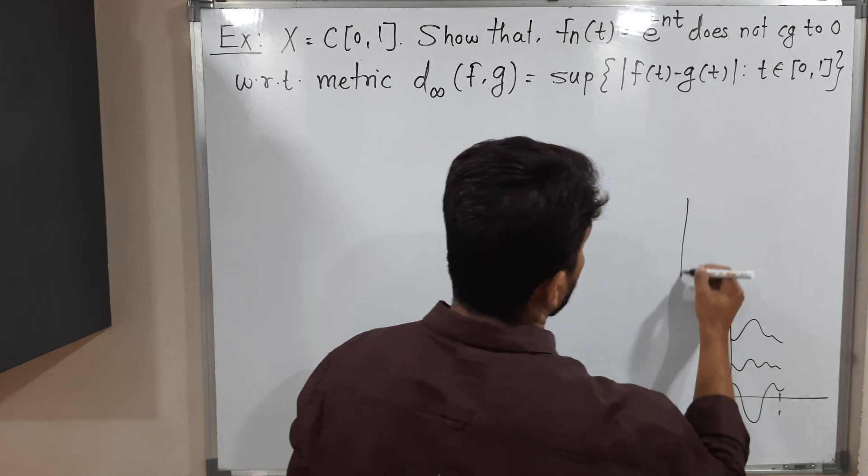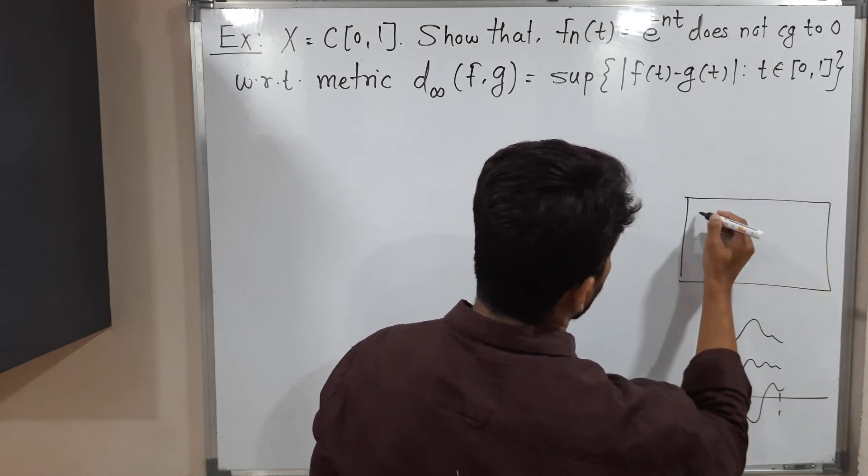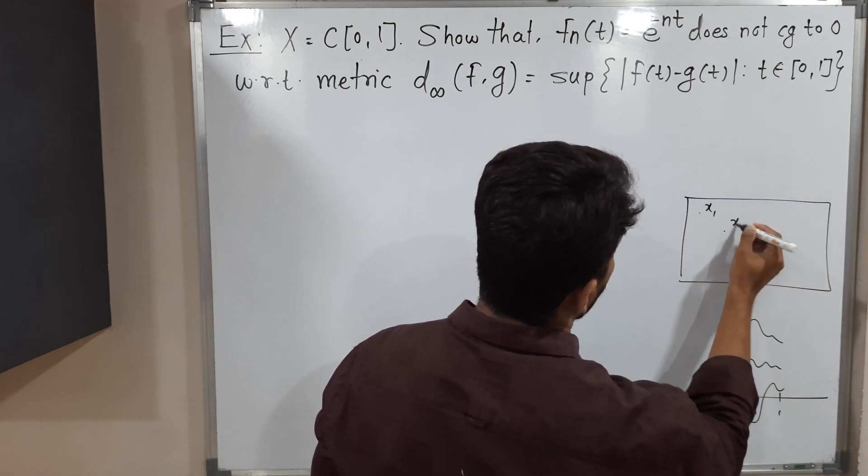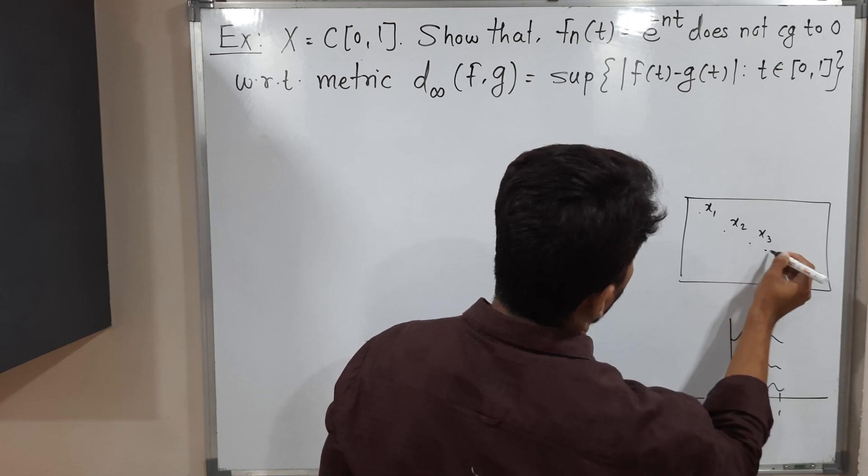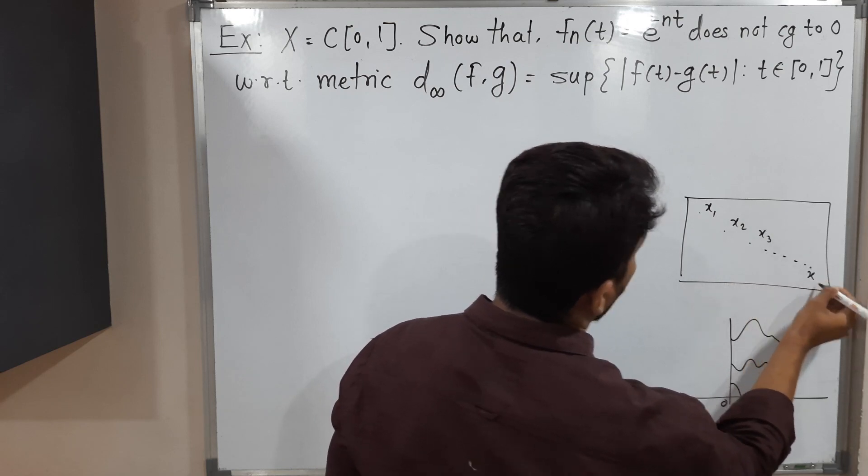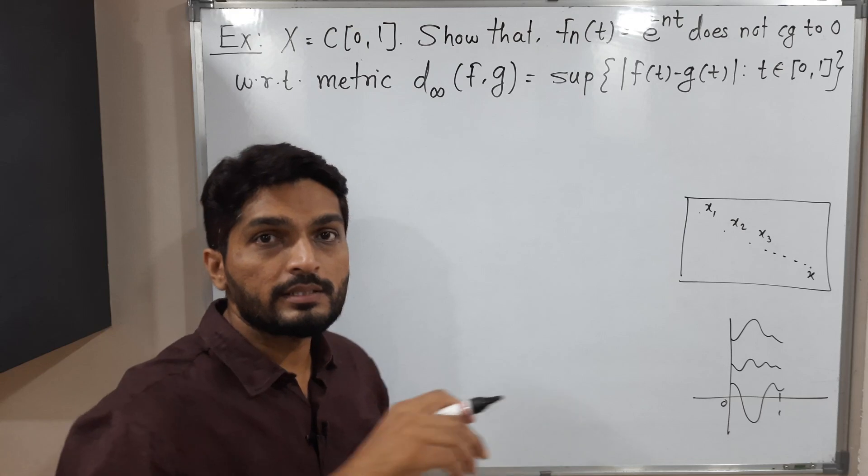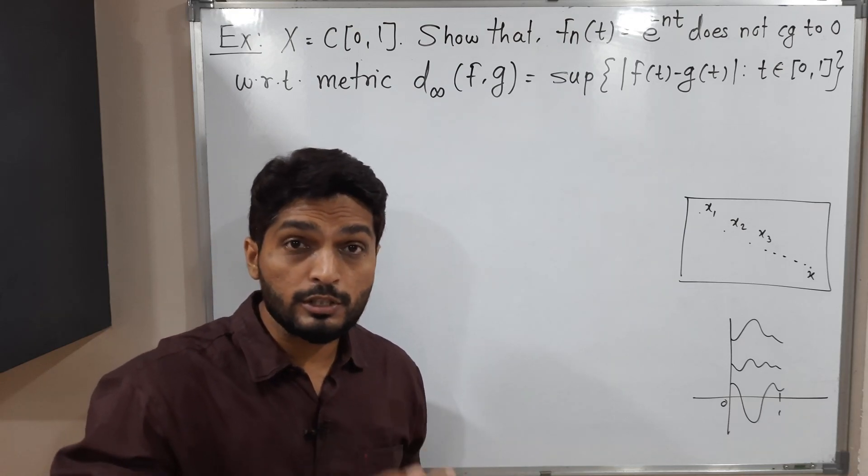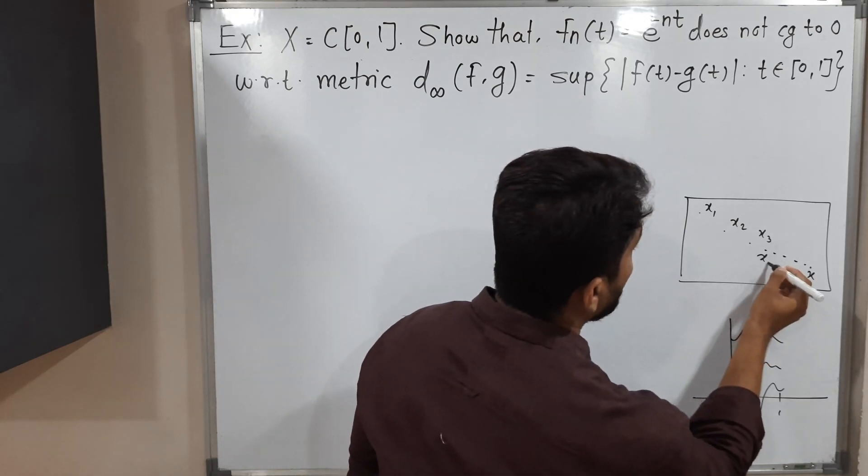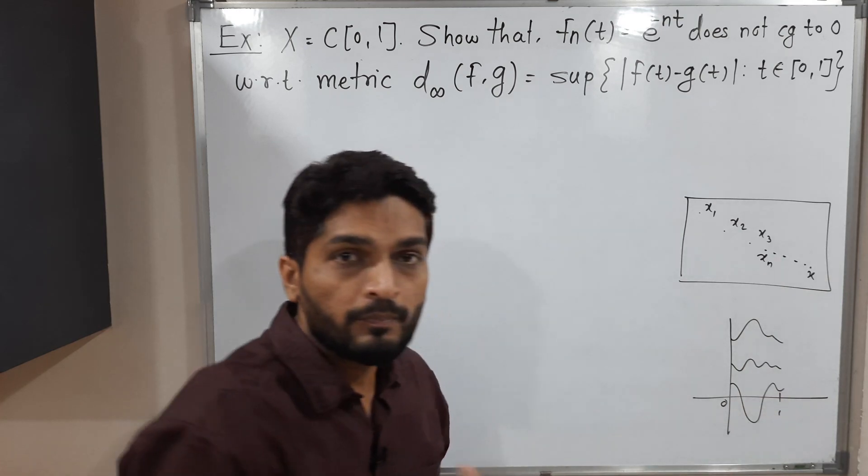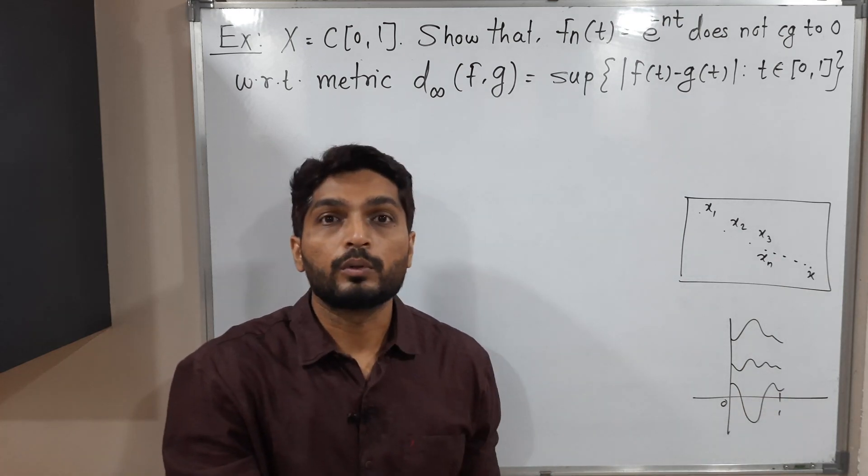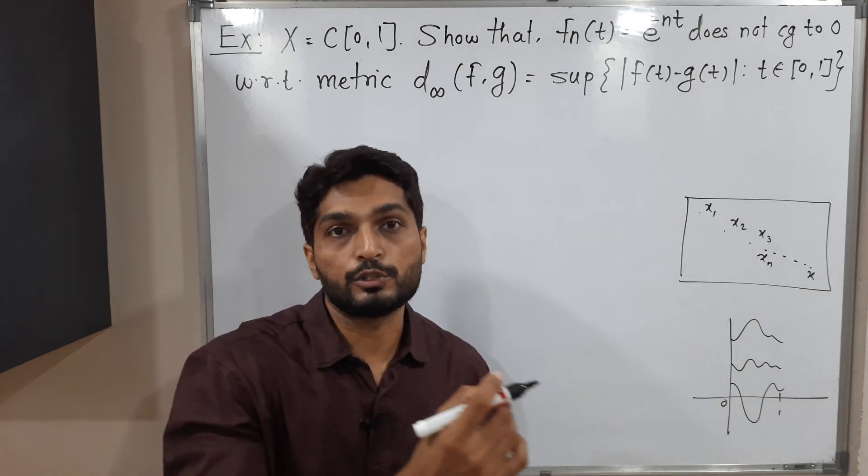Let us discuss with the help of a diagram. Suppose this is first point X1, this is X2, this is X3 and so on. All these points are moving towards a single point. That means distance between Xn, any arbitrary point and X, is going to 0. Then we say the sequence converges to X.